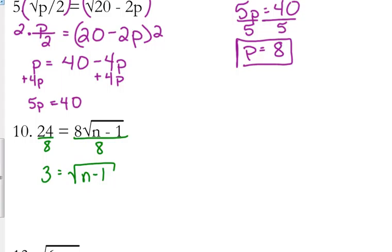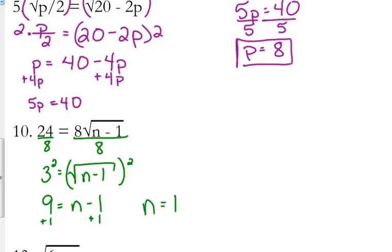At this point we can square both sides. 3 squared is 9, so 9 equals n minus 1. Add 1 to both sides — n equals 10. Check it: plug back into the original. 10 minus 1 is 9, square root of 9 is 3, and 8 times 3 is 24. Correct.